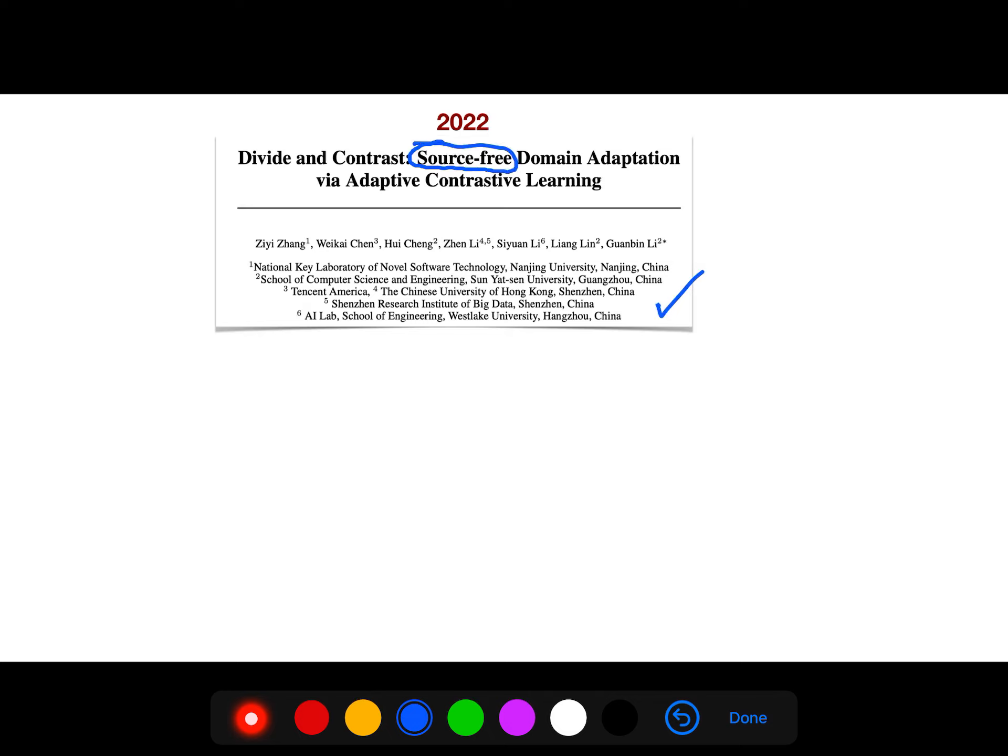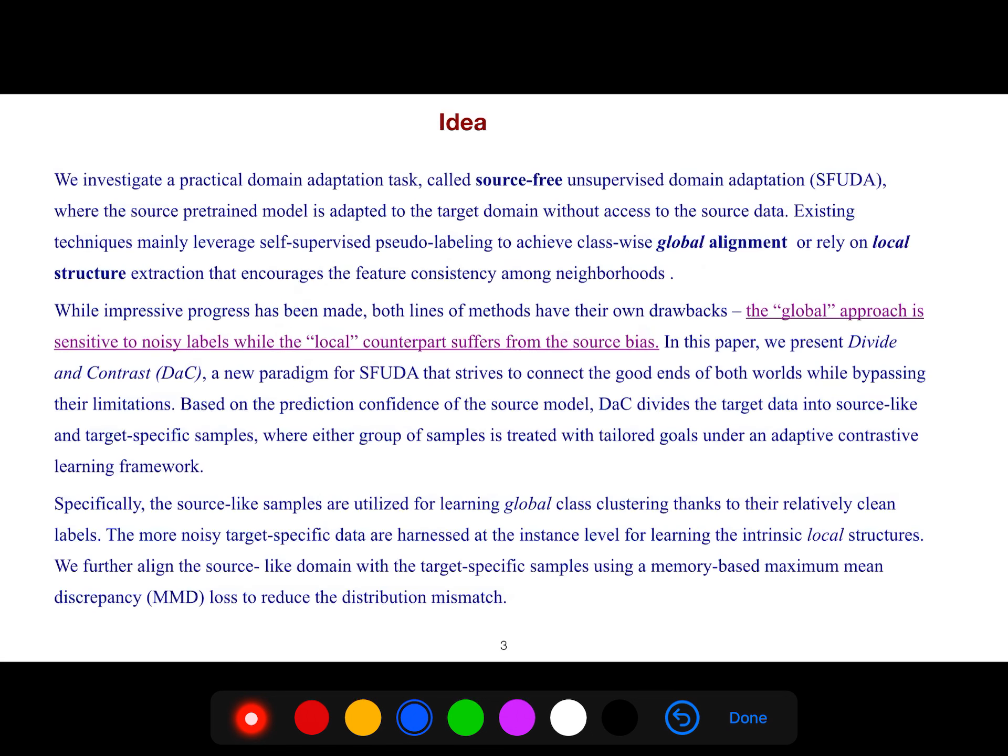We investigate a practical domain adaptation task called source-free unsupervised domain adaptation (SFUDA), where the source pre-trained model is adapted to the target domain without access to the source data. Existing techniques mainly leverage self-supervised pseudo-labeling to achieve class-wise global alignment or rely on local structure extraction.